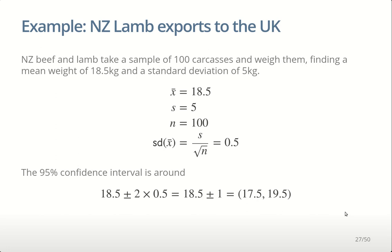We would say we're 95% confident that the average weight of lamb carcasses exported to the UK is somewhere between 17.5 and 19.5 kilos. We're not saying it is definitely between that range — we're giving our level of confidence, because for this particular sample it might be one of those extreme ones where we're further than two standard deviations from the truth. So we're allowing for that by saying we're 95% confident, meaning there's about a 5% chance we're wrong.